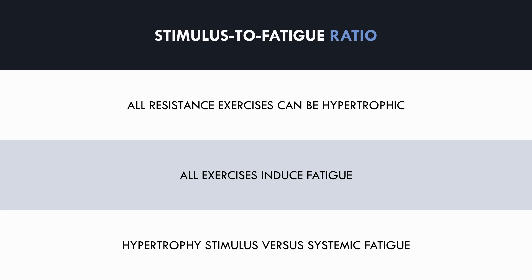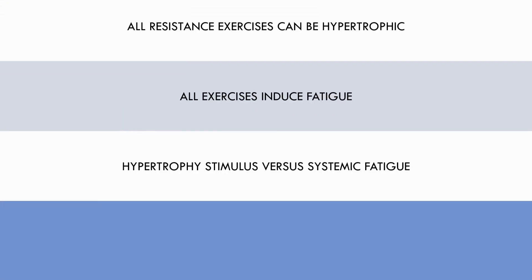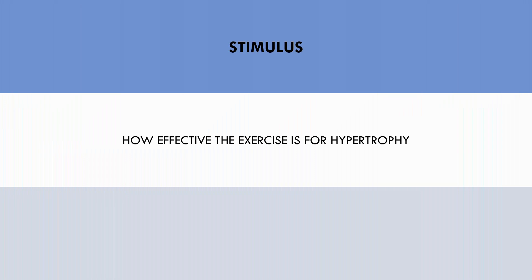Let's now explore what exactly we mean by stimulus and fatigue. The stimulus portion of this ratio refers to how well an exercise provides a hypertrophic stimulus. An exercise that is more stimulative for muscle growth means that less total volume will need to be performed to get the same hypertrophy outcome as an exercise which is less stimulative. There are a few key factors which make an exercise more or less stimulative.